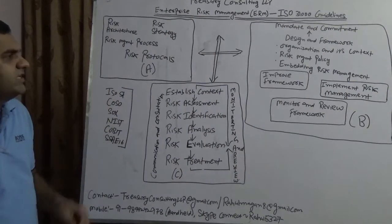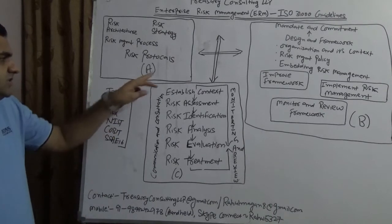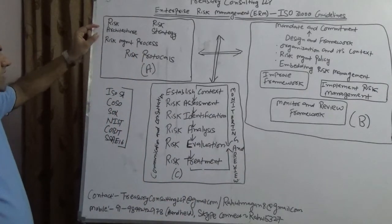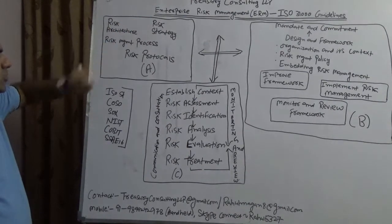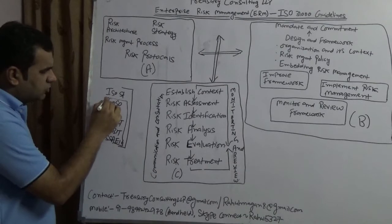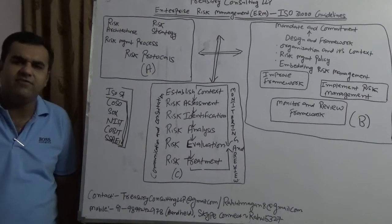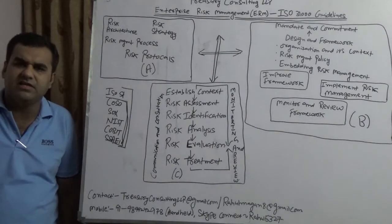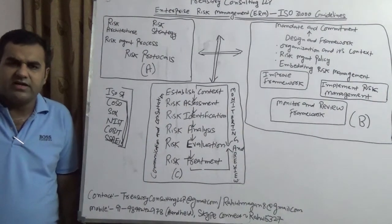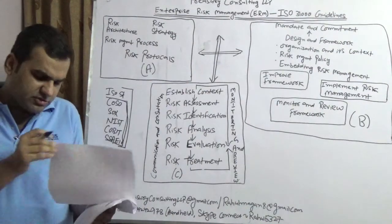In that regard, ISO 31,000 plays a very important role. In the interest of space, I have divided this into three parts which you can very well see: part A, part B, and part C. Part A talks about risk architecture, strategy, management process, and protocols. In my view, protocols means the framework which is your COSO, SOX, NIST, COBIT, and SSE 16. But we clearly need to understand that this is not a cup of tea for everybody because everybody cannot have that, and unless you are having the global frameworks in your company, there is no point.